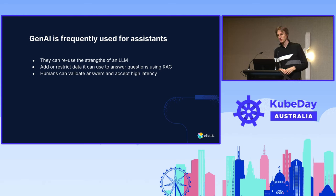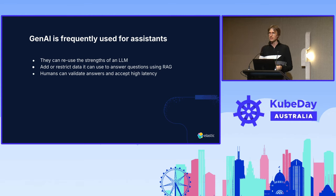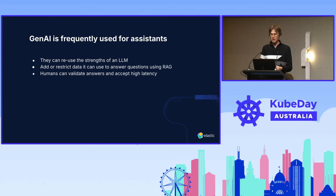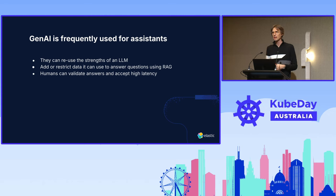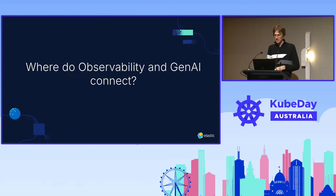Gen AI is frequently used for assistance, and that leverages its strengths because humans misspell things, talk in different languages, and have implicit knowledge assumptions. LLMs can also be quite slow compared to a database query — you could be spending 30 seconds getting an answer. But if the human decides there's enough value there, they'll be okay with that. Just make sure they see the loading indicator. So, we've covered the first two topics — now let's connect them: observability and Gen AI.